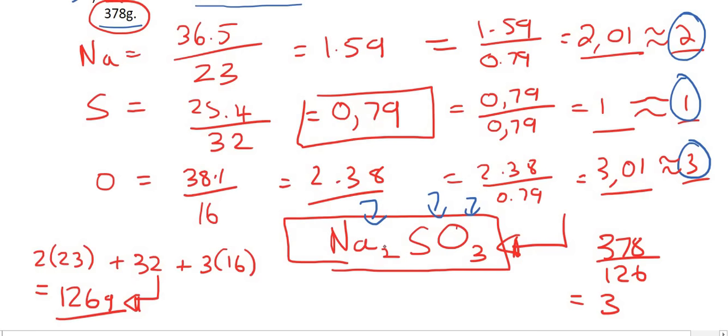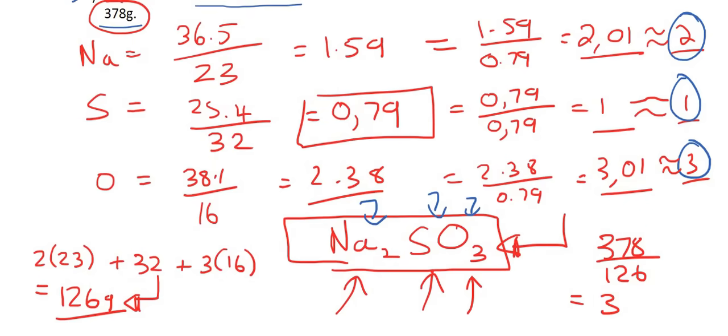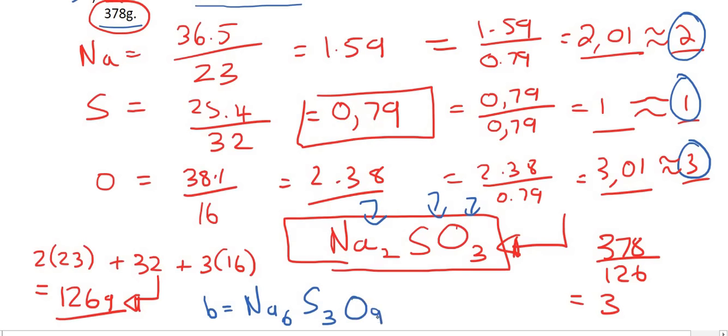So it means that the real molecule, the molecular formula, is 3 times as heavy as this. So we can now update the answer. The answer for B would be Na, not to the 2 but to the 6 because we have to multiply everything by 3, S to the 3, and O to the 9. This is the molecular formula, and the one in red is the empirical formula, and they are going to ask you to do both in an exam.